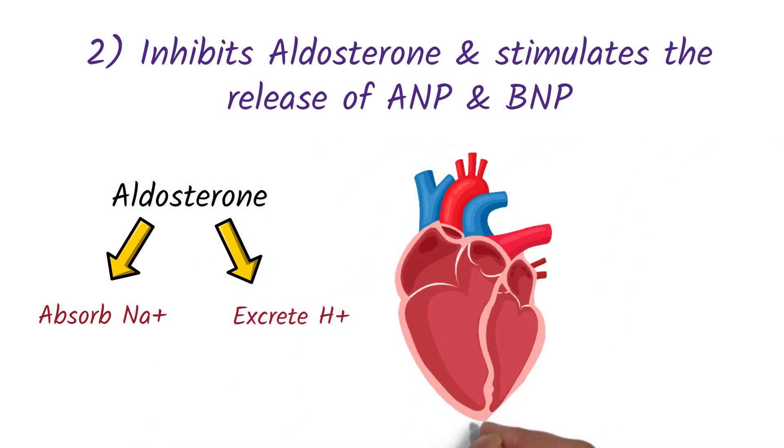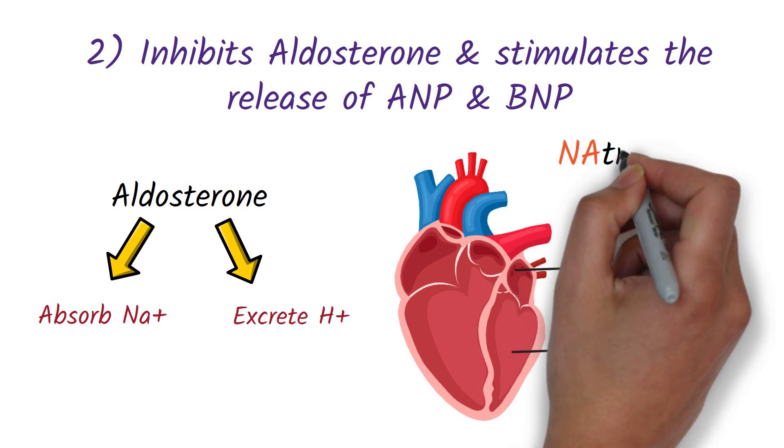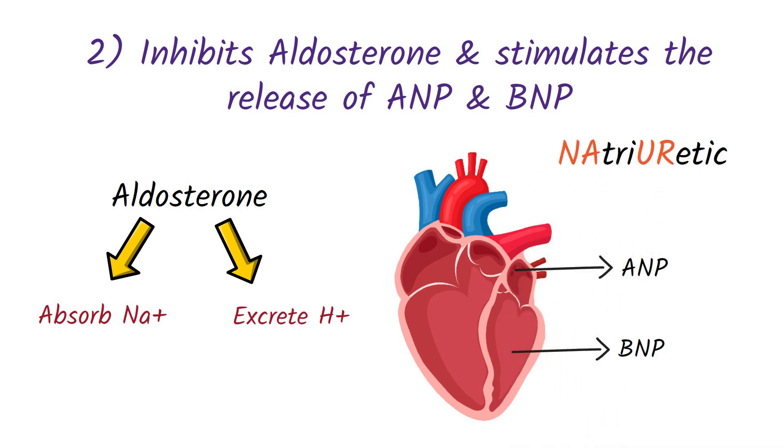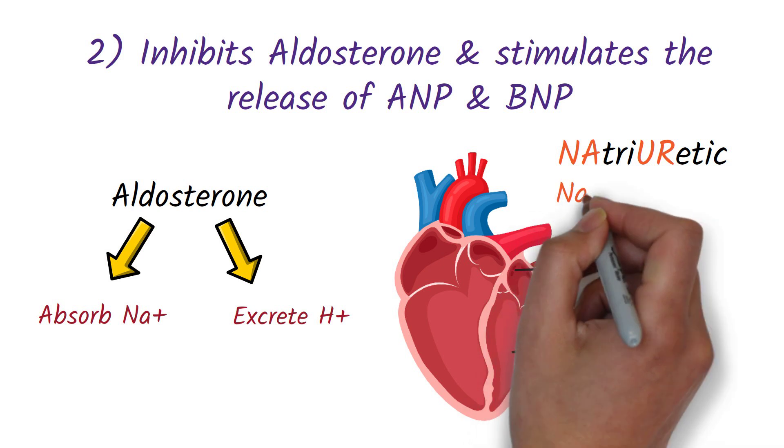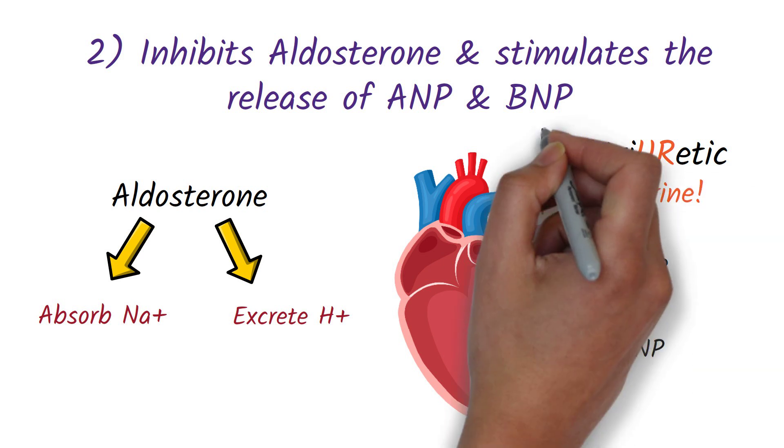ANP and BNP are two hormones released by your atria and ventricles when they stretch or dilate due to volume overload. ANP and BNP, as the name suggests, are natriuretic peptides. Natriuretic means sodium in urine. These hormones increase sodium and water excretion.